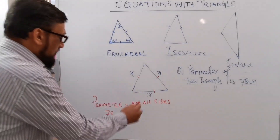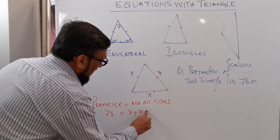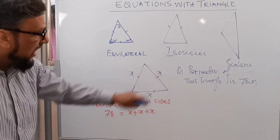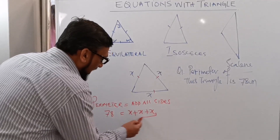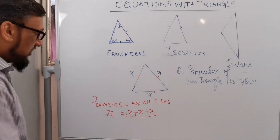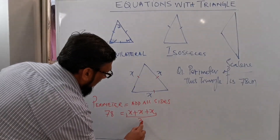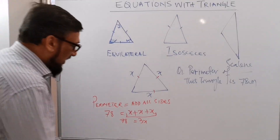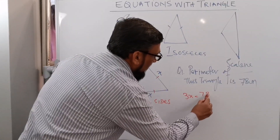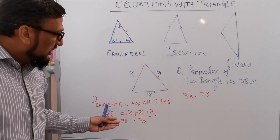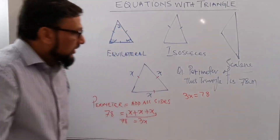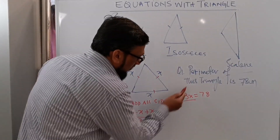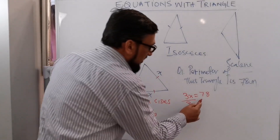Since all sides are equal, we write x plus x plus x — that's the first, second, and third side. Adding all three sides gives us 3x, so 3x equals 78. We can write this as the equation 3x equal to 78.